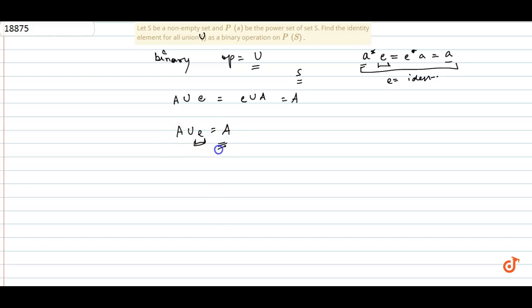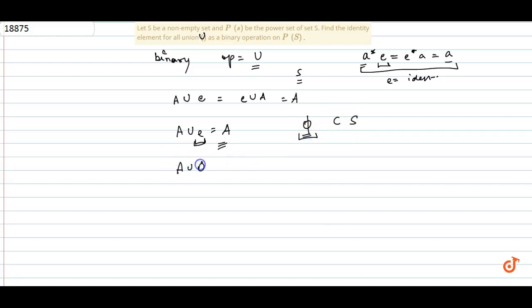अब कौन सा ऐसा element होगा जिसका A के साथ union करने पर हमें हमेशा A ही मिले? वो होता है φ (empty set/phi), which is also a subset of S। तो हमारा answer है φ, क्योंकि A ∪ φ = φ ∪ A = A। This is the answer.